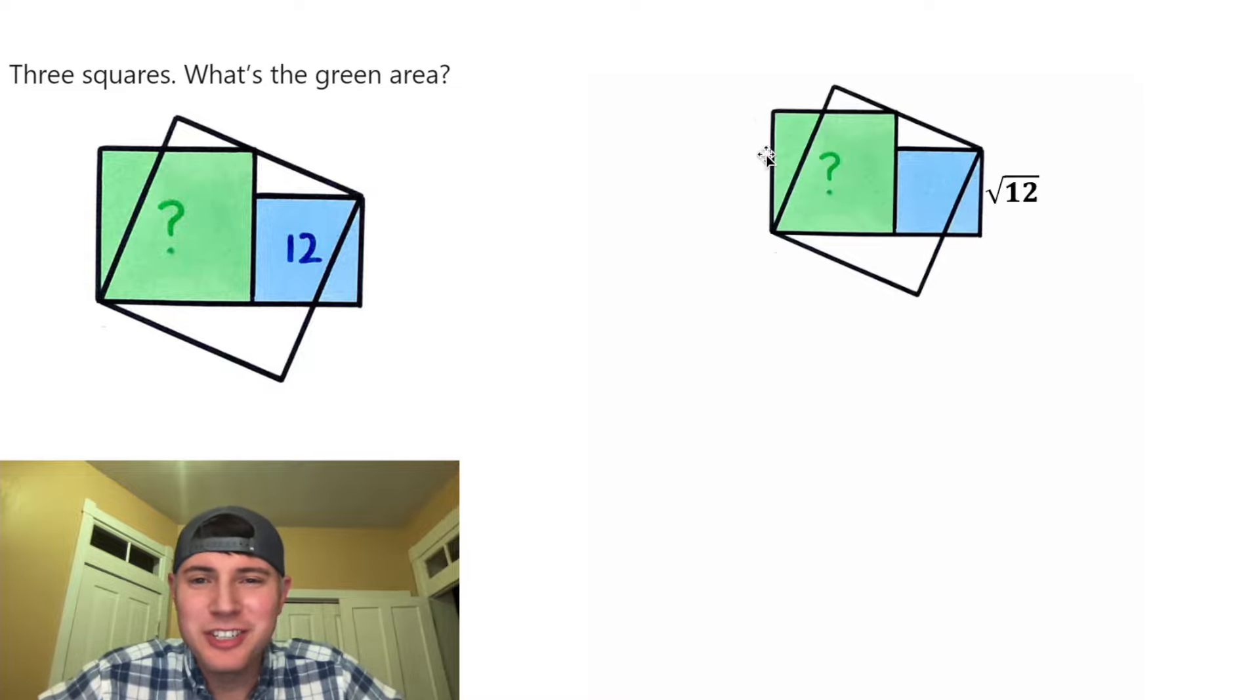And then for the green square, we don't know the side length, so let's call that X. And let's also get rid of this area label. And for this last square, let's give it a side length of Y.